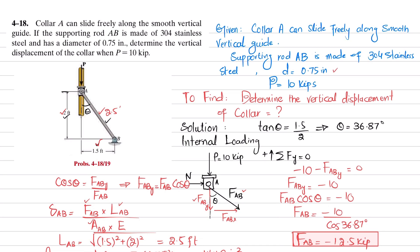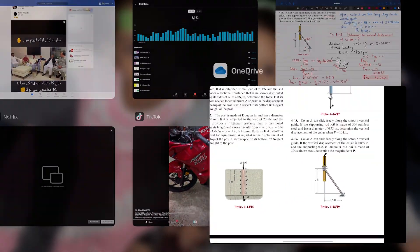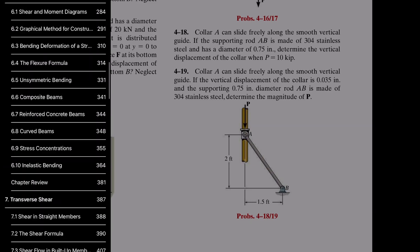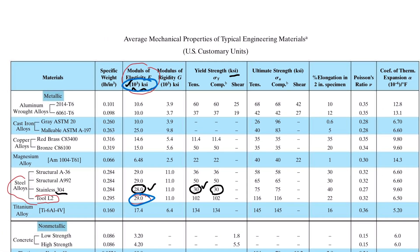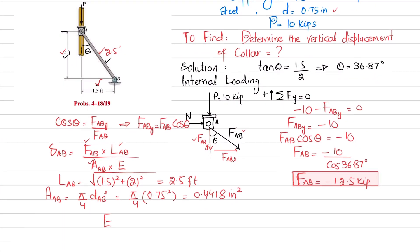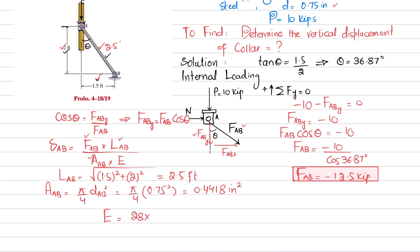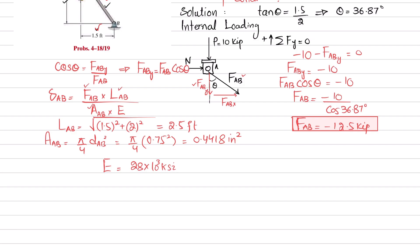The modulus of elasticity E for 304 stainless steel is obtained from the material properties table at the end of the book. Using US customary units, E for 304 stainless steel is 28 × 10³ ksi (kilo-pounds per square inch).